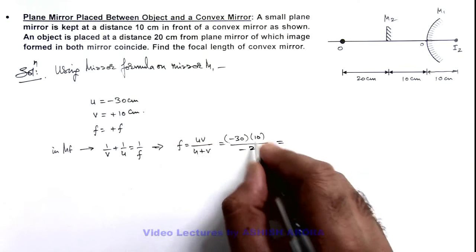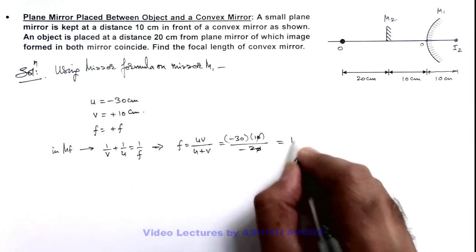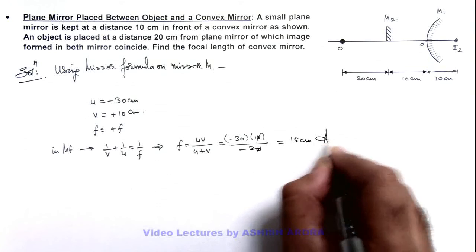On simplifying this, we get 30/2, which is 15 centimeters. That is the answer for this problem.